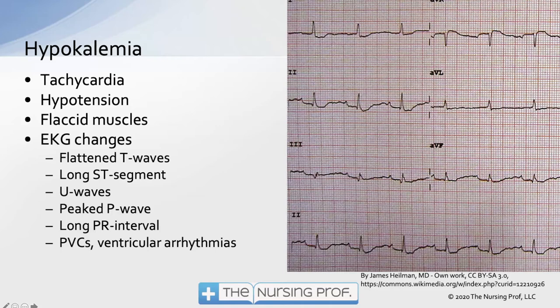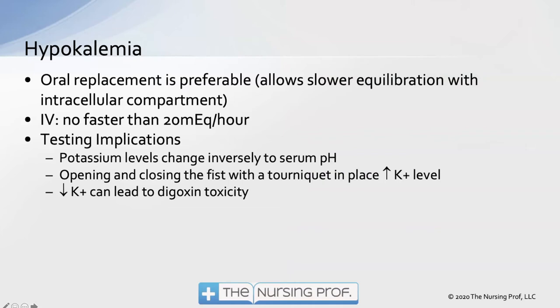Other hypokalemia symptoms include flaccid muscles, hypotension, and tachycardia — somewhat opposite effects compared to hyperkalemia. Oral replacement is preferable since it's the normal route for potassium absorption. If giving potassium IV, administer it slowly to avoid vessel damage and allow better absorption.